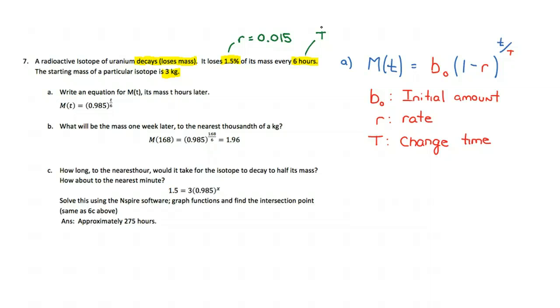Six hours is our capital T. What that means is every six hours, we lose 1.5% of the mass that is currently there. And here we have 3 kilograms, and this is our B0, or our starting amount.